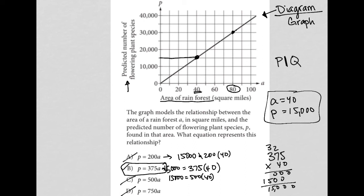there are only really two points on this graph that make sense to use, because they're the only ones where we know for sure what the values are. Those are the ones that go directly through the intersection of our a value and p value—right at 40 and 15,000, and again at 80 and 30,000.